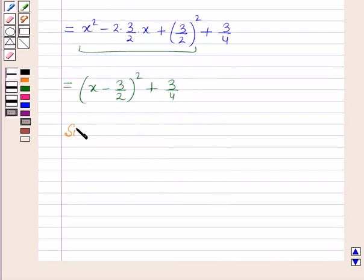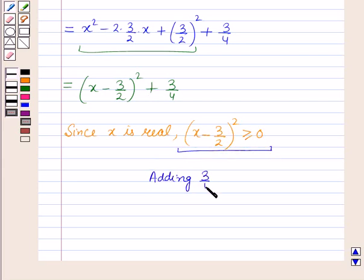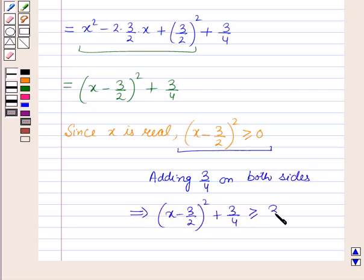Since x is real, then (x - 3/2)² is greater than or equal to 0, being the square for all real values of x. Now adding 3/4 on both sides, this implies (x - 3/2)² + 3/4 is greater than or equal to 3/4.